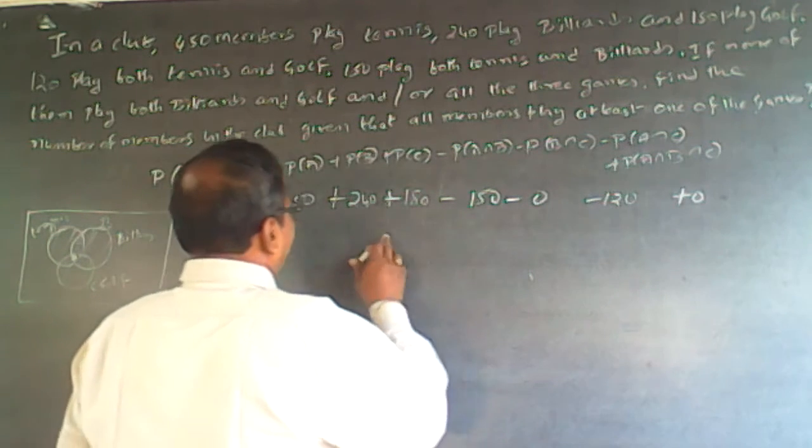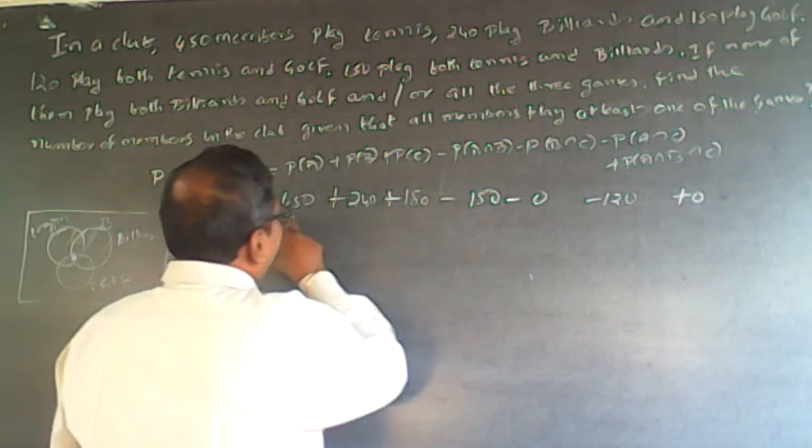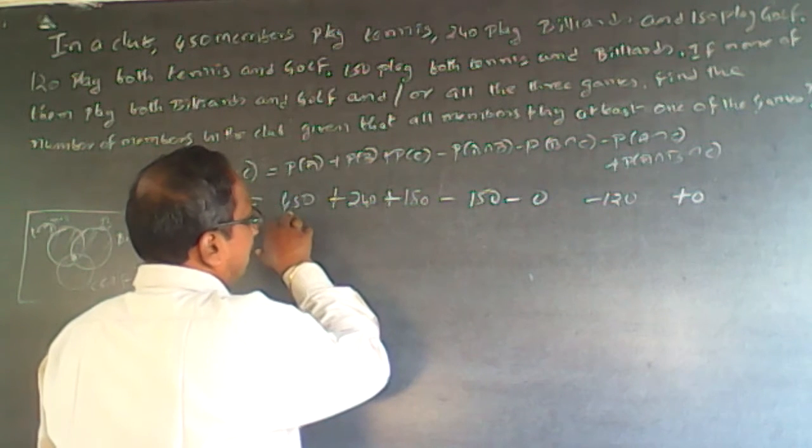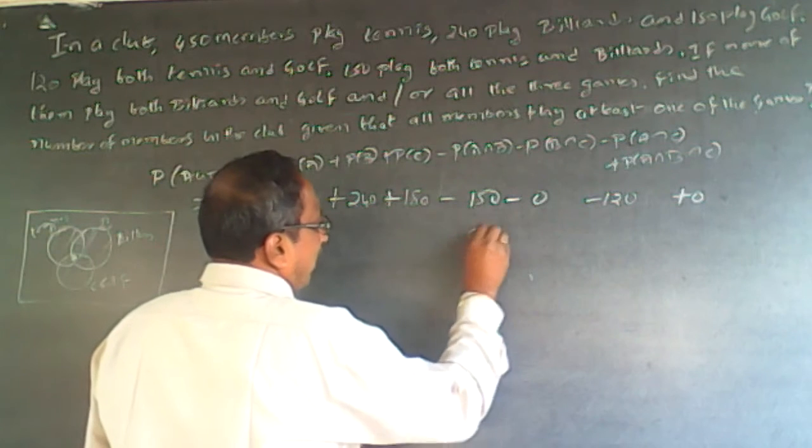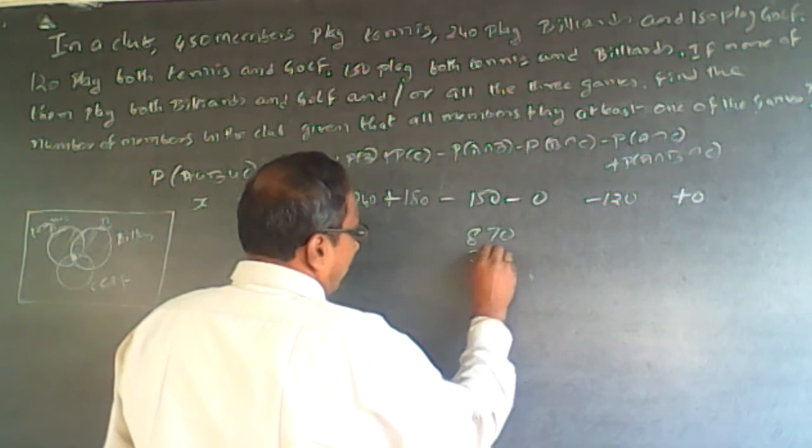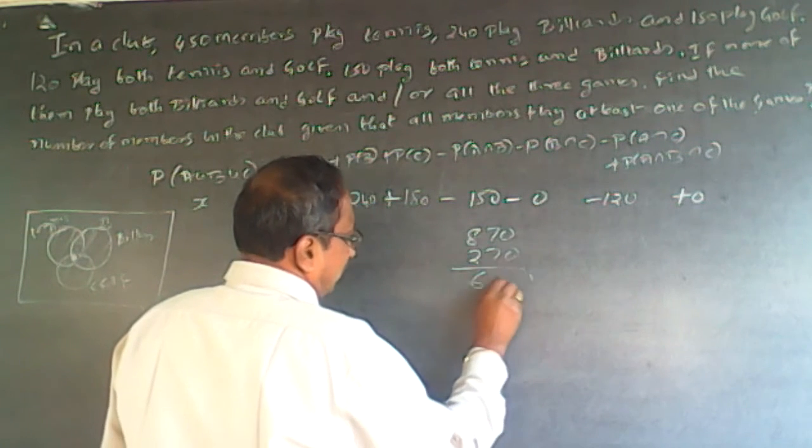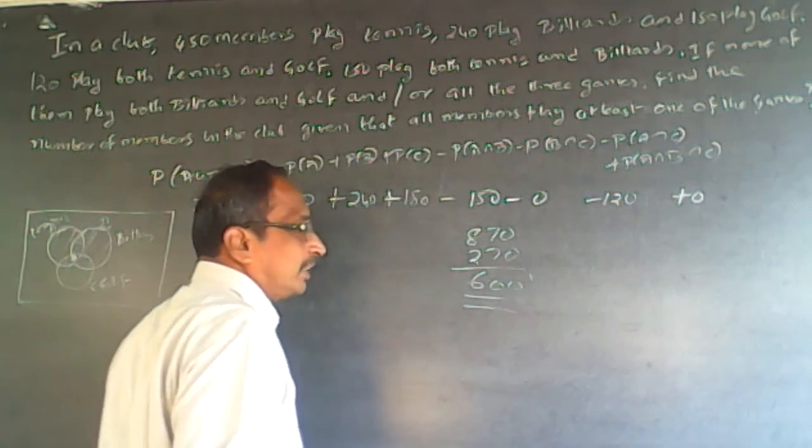So x will be equal to 450 plus 240 plus 180 minus 150 minus 120 plus 0. So it will be 870 minus 270. The answer is 600.